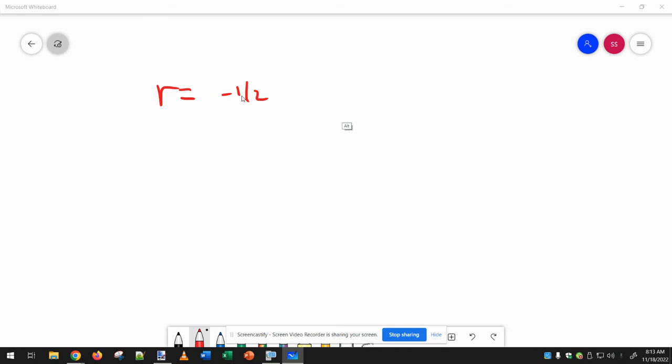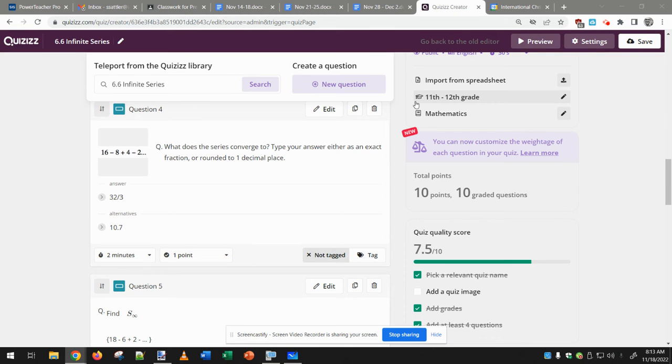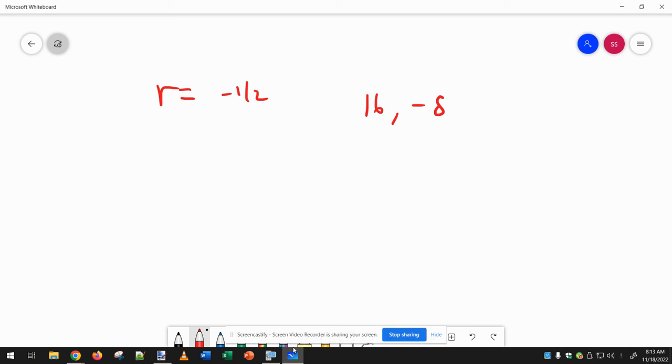because these numbers are 16 minus 8, and then positive 4, and then minus 2.